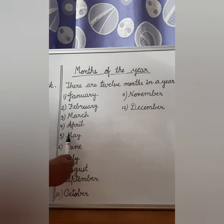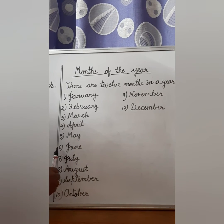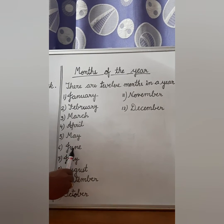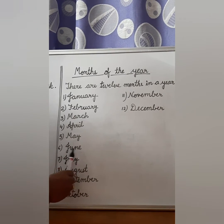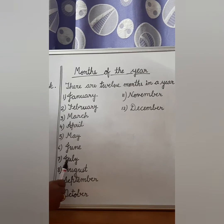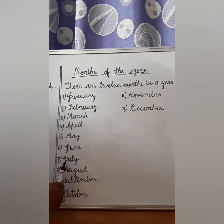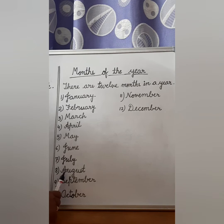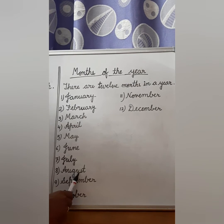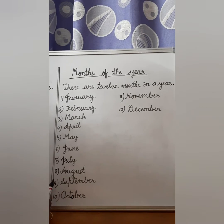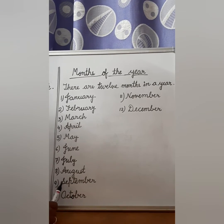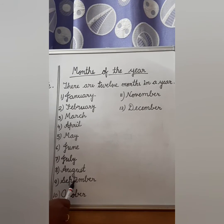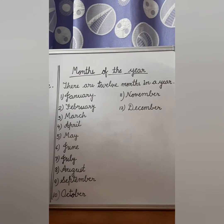Number 5 — May, M-A-Y, May. Sixth — June, J-U-N-E, June. Number 7 — J-U-L-Y, July. Then number 8 — August, A-U-G-U-S-T, August. Then comes September, S-E-P-T-E-M-B-E-R, September.